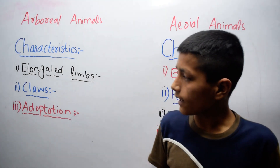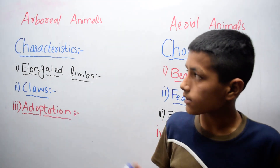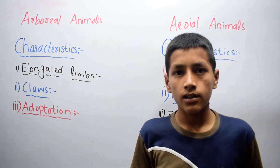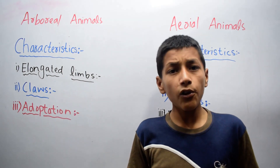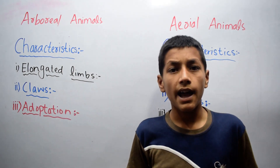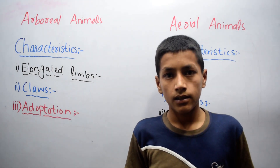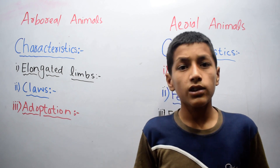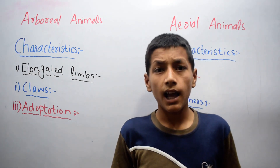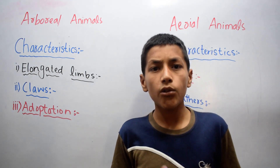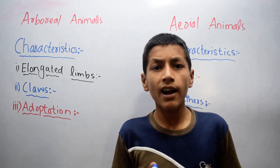The second characteristic is claws. Arboreal animals have claws, and these claws help them in gripping the branches.